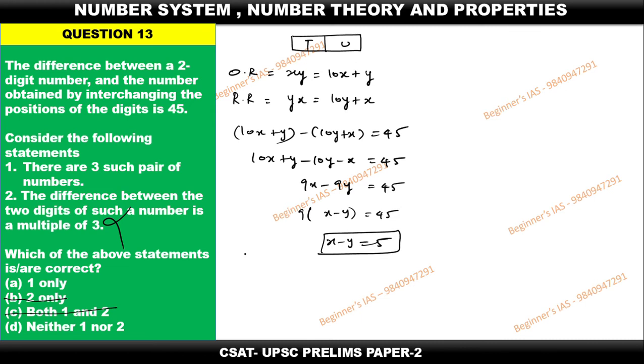Now check with statement number 1: there are three such pairs of numbers. Let us identify the pairs. So here x then y, so here the condition is x minus y is equal to 5. How many pairs are there? I'm starting with 6, 1 - the difference is 5. And then 7, 2 - the difference is 5, yes. 8, 3 - difference is 5, yes. And then 9, 4 - the difference is 5, yes.